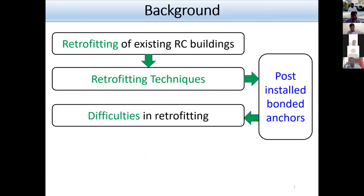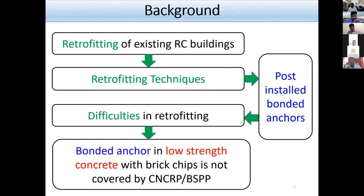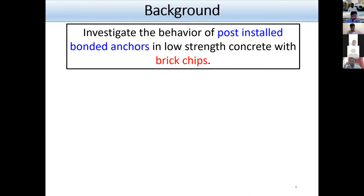The tensile and shear capacity of post-installed bonded anchors shall be evaluated according to the CNCRP manual for seismic retrofit. However, the difficult part is that there is not sufficient data to cover cases associated with low-strength concrete, which is a barrier to retrofitting existing buildings. To overcome this problem and to establish a reliable manual, experimental studies were conducted by Osaka University in cooperation with BUET to investigate the behavior of post-installed bonded anchors in low-strength concrete with brick chips.